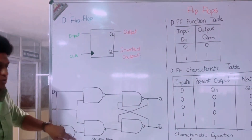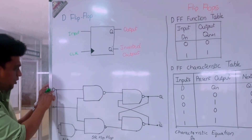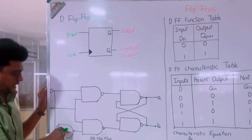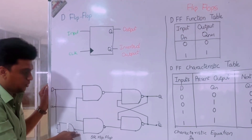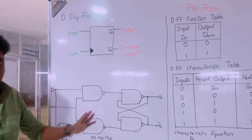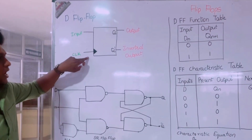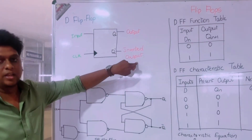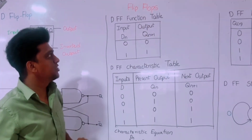Instead of using two separate inputs S and R, here we are using only one input and inverting that input. So we get two inputs, one here and the other one here. Remaining connections are everything similar to that of SR flip-flop. We are using a clock pulse here, and we are getting output and the inverted output.